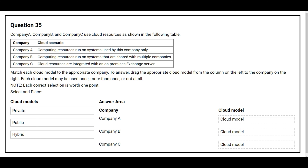Question number 35. Company A, Company B, and Company C use cloud resources as shown in the following table. Company A computing resources run on systems used by this company only. Company B computing resources run on systems that are shared with multiple companies. Company C cloud resources are integrated with an on-premises Exchange server. Match each cloud model to the appropriate company.